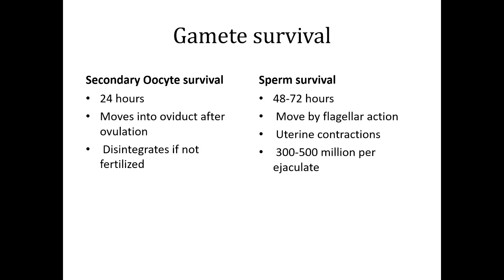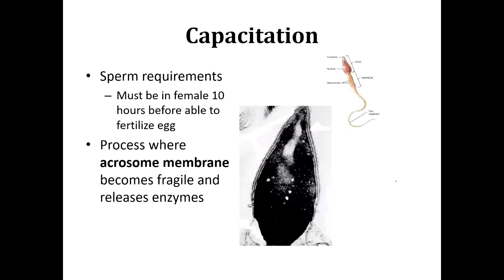Uterine contractions themselves help move the sperm. There are millions and millions of sperm — not all of them will even get near the egg. The egg is huge compared to the sperm. Before the sperm can actually fertilize the egg, it has a capacitation period of about 10 hours, where its outer shell has to break down before the nucleus could even fuse with the egg. So there's that window where sperm has to have time to get to the egg and break down — it wouldn't be an immediate fertilization.